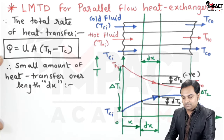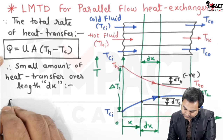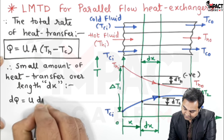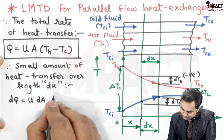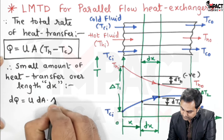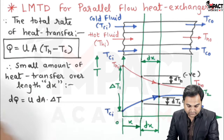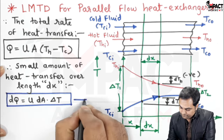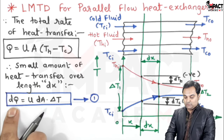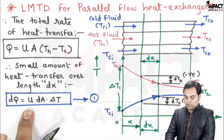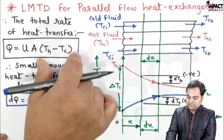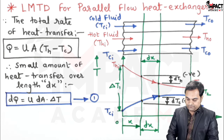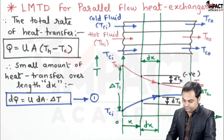The small amount of heat transfer over length DX would be denoted by DQ, with area DA and temperature difference delta T. That is: DQ equals U into DA into the temperature difference of hot and cold fluid, denoted by delta T. This is equation one.